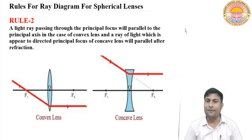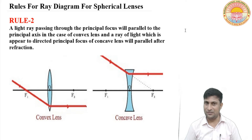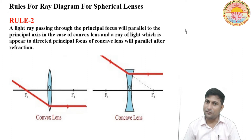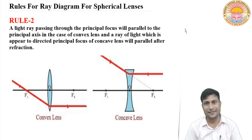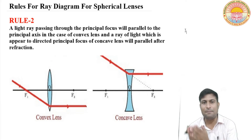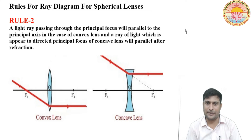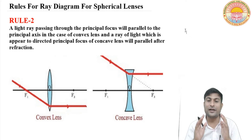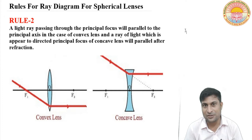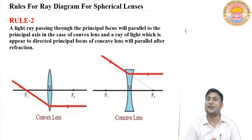If a light ray is directed towards the principal focus of the concave lens, then after refraction it will pass parallel to the principal axis.